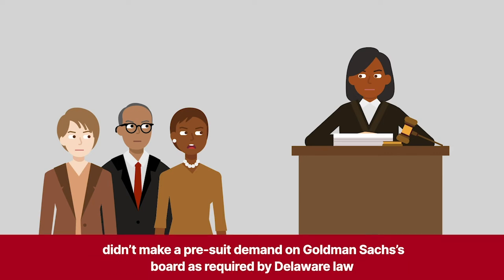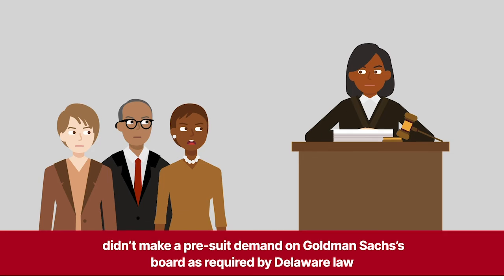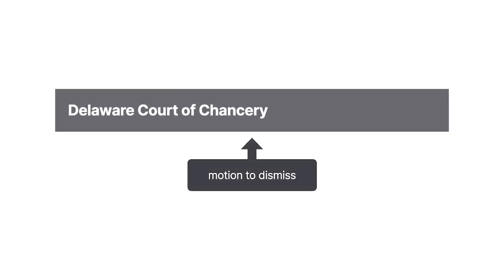Plaintiffs didn't make a pre-suit demand on Goldman Sachs' board as required by Delaware law. Accordingly, Goldman Sachs moved to dismiss.